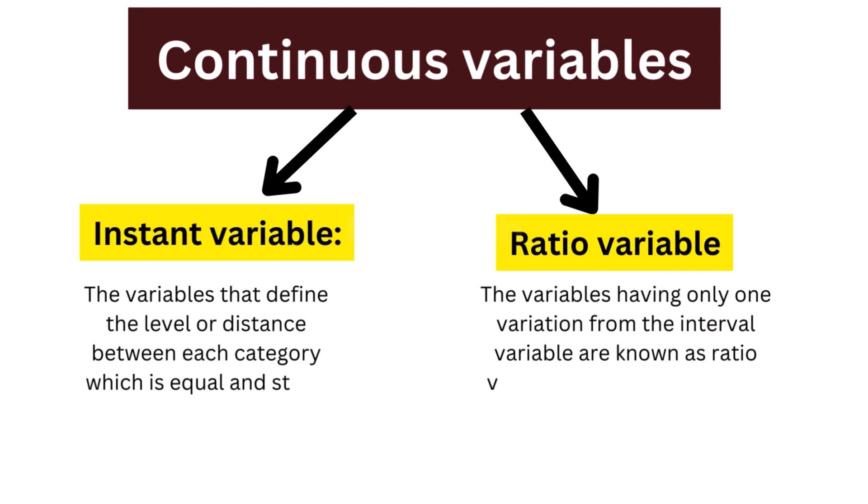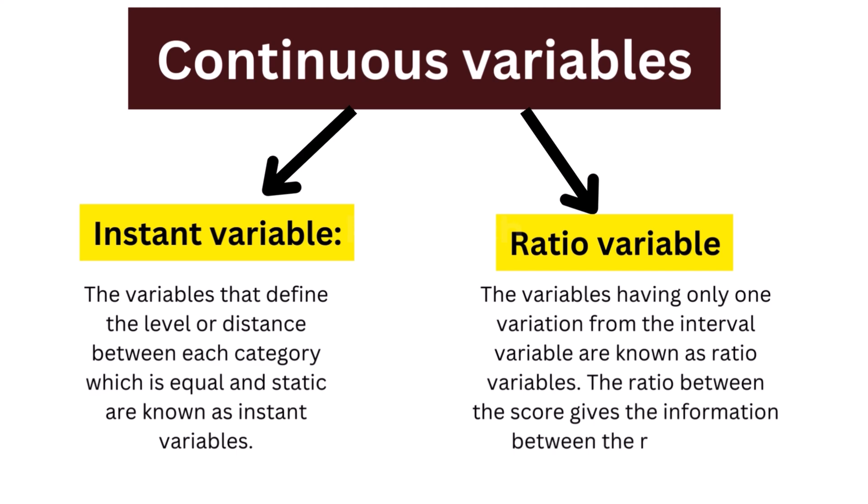Two, ratio variable. The variables having only one variation from the interval variable are known as ratio variables. The ratio between the score gives the information between the responses regarding the relationship.